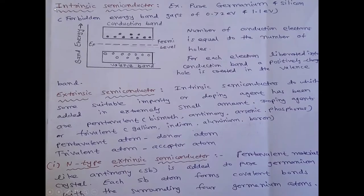So, first of all, we will study intrinsic semiconductors. Example is pure germanium and silicon. Here, orbital energy gaps for these two materials are 0.72 electron volt and 1.1 electron volt.